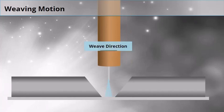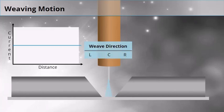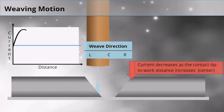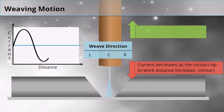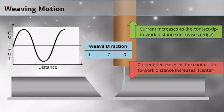In a weaving motion, the TAST software notices the current decreases when the contact tip to work distance increases, such as in the center of the joint. TAST then observes that the current increases when the contact tip to work distance decreases as it approaches the weld joint edge.